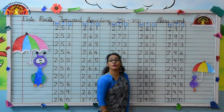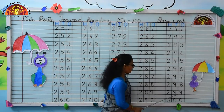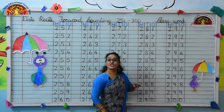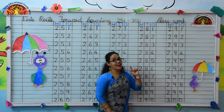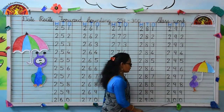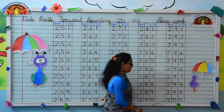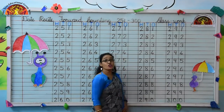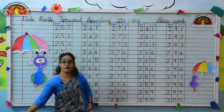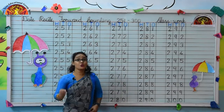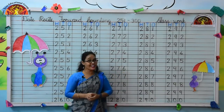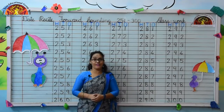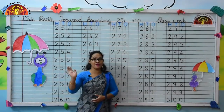Kids, now you tell me what comes after 299. Yes, 300. Kids, do oral practice of forward counting, 251 to 300, like this. Thank you. Have a nice day. Bye-bye!